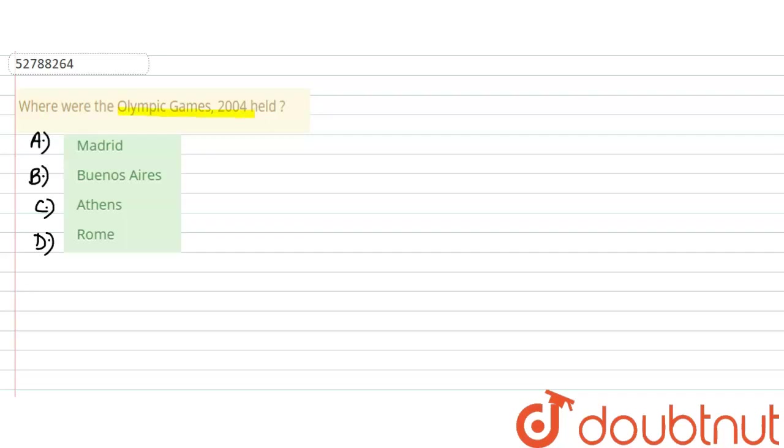Rome. So if you look at this answer, the answer will be option C, that is Athens. In 2004, where were the Olympics? Athens.